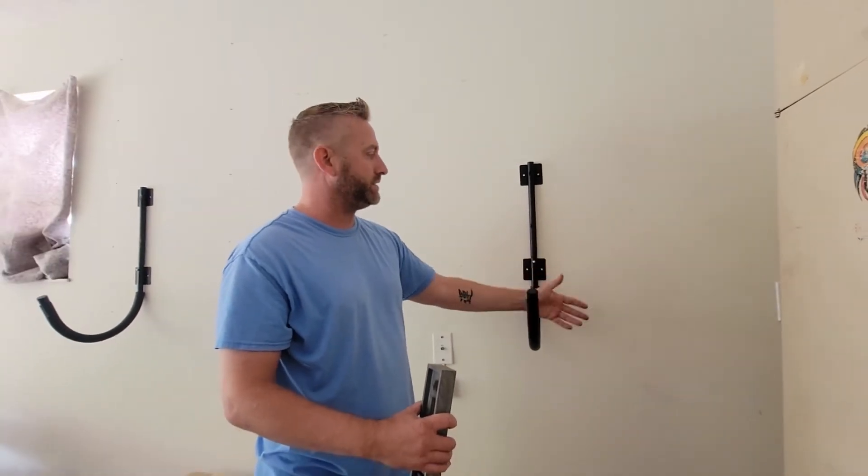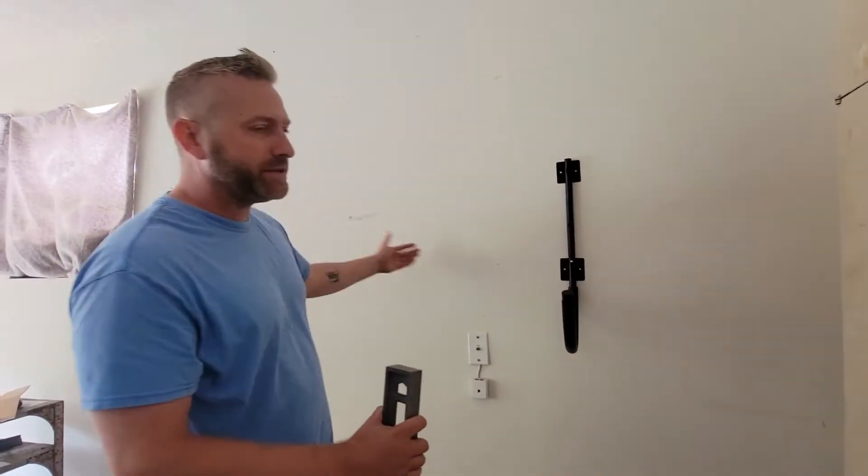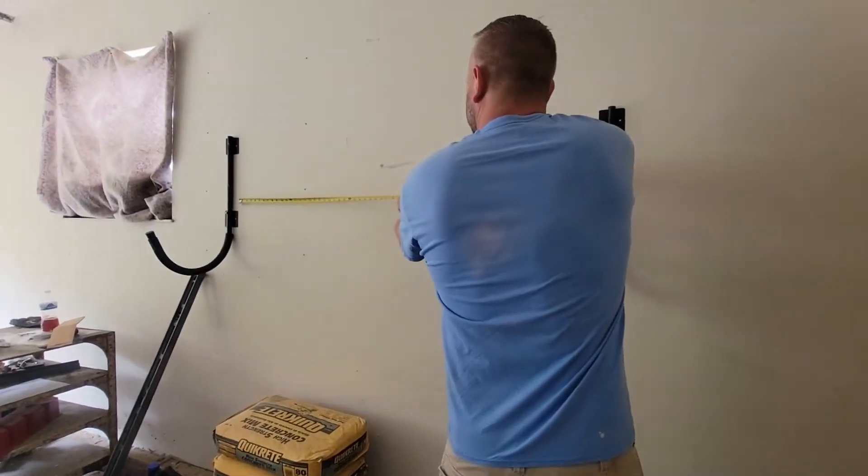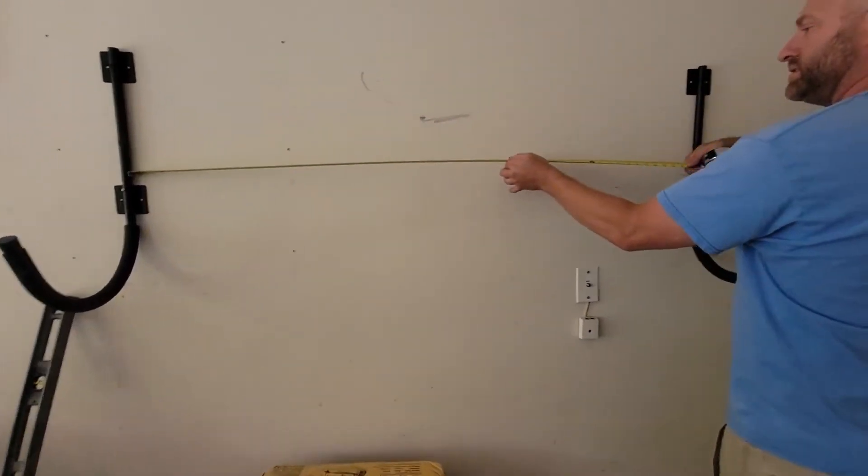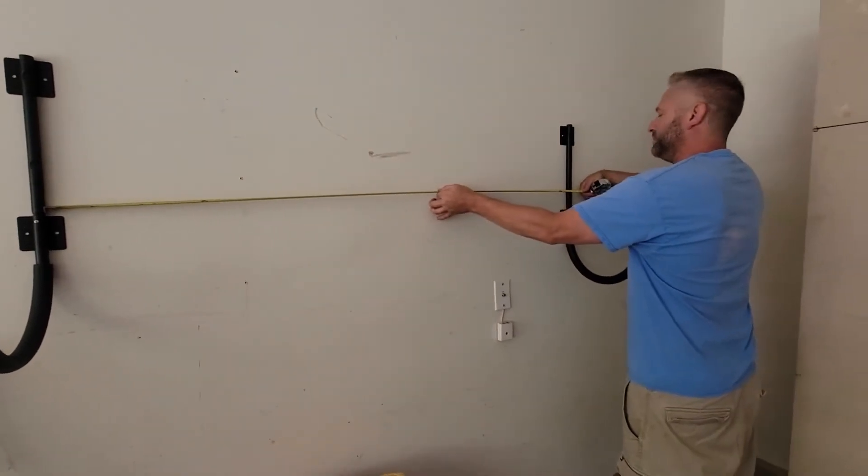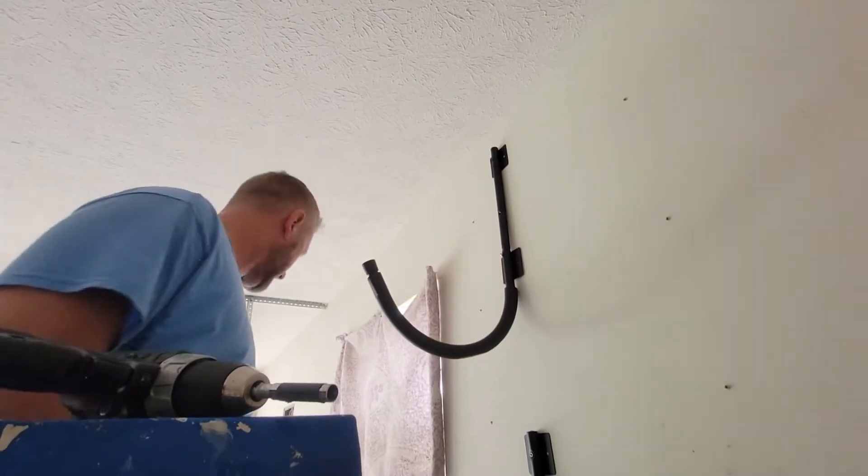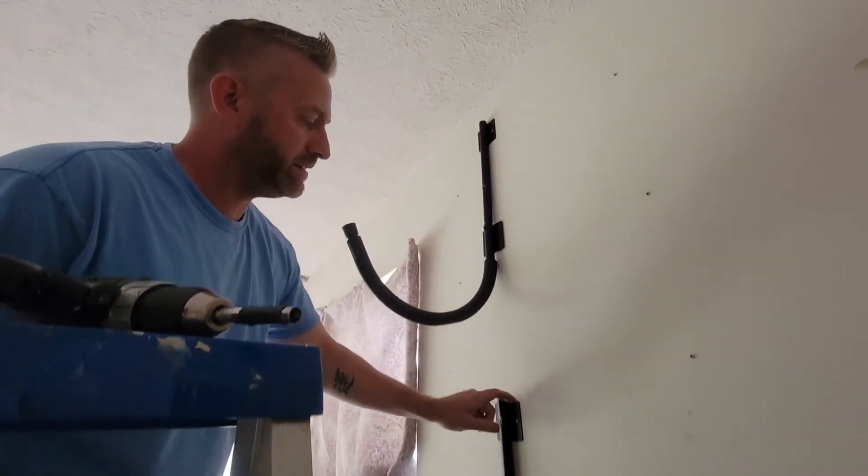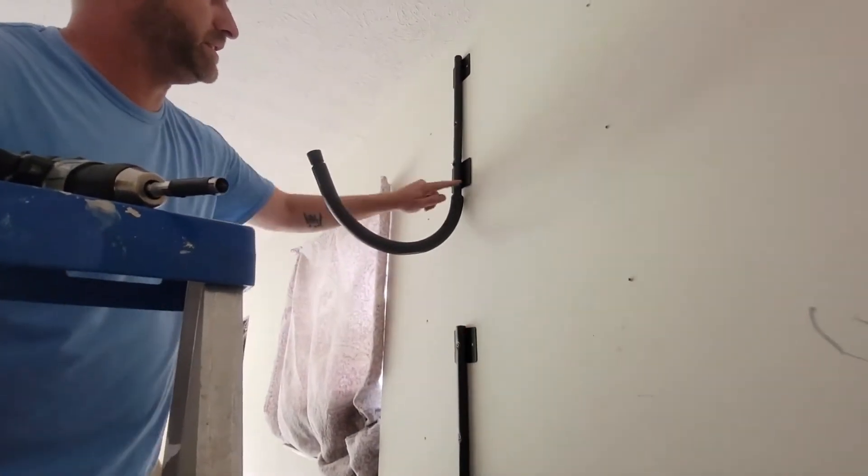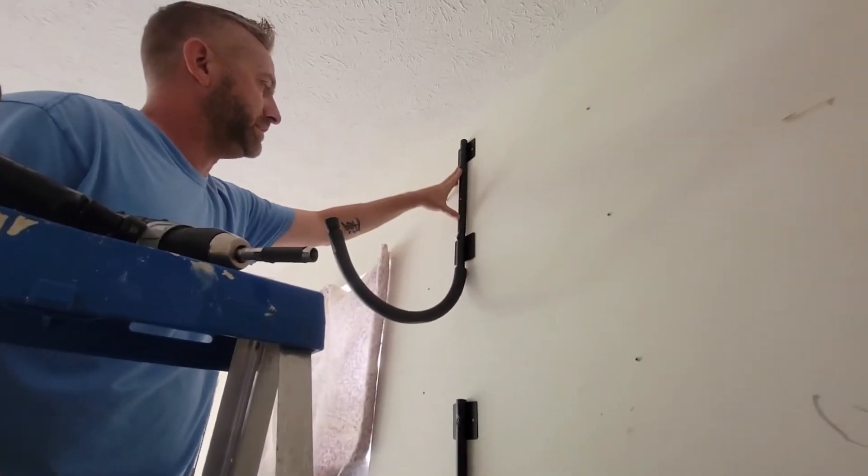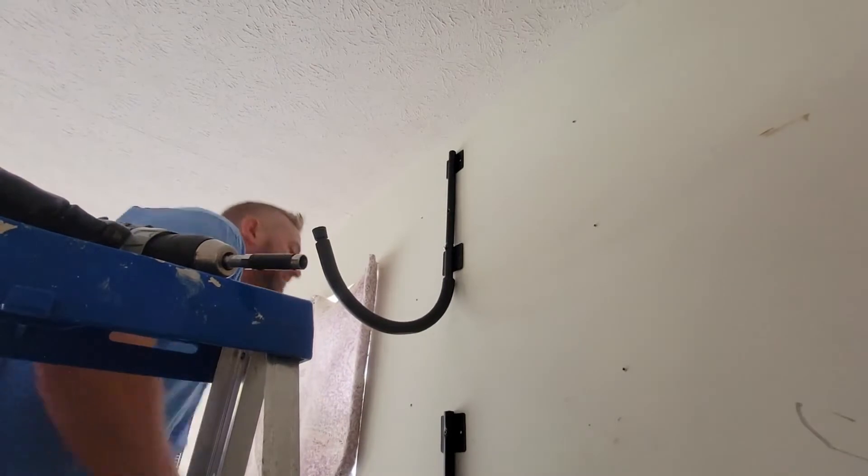So I'm adding a second rack up here for a second kayak. And what I did was I measured in between this little flange and this one, about 14 inches, and then I'm putting it level with this other one. Just took my level, got it across, made sure it was nice and even, double-checked my stud was there.